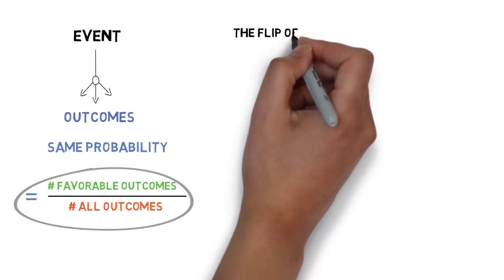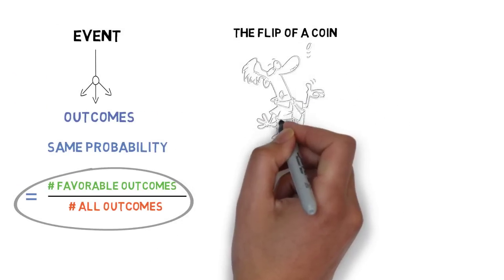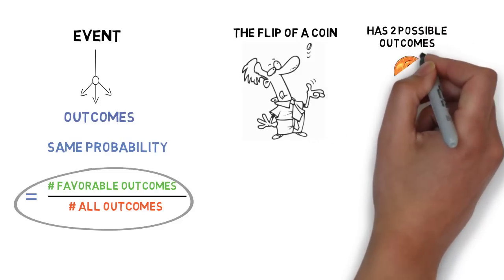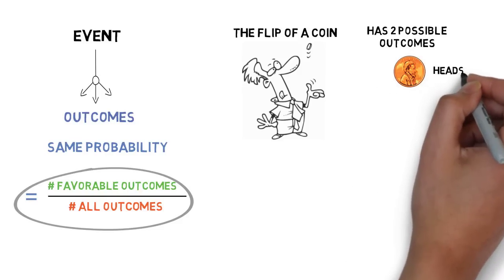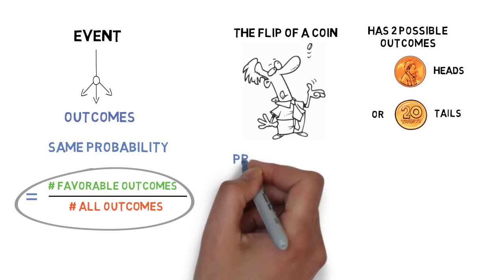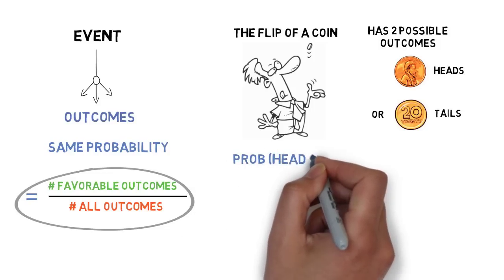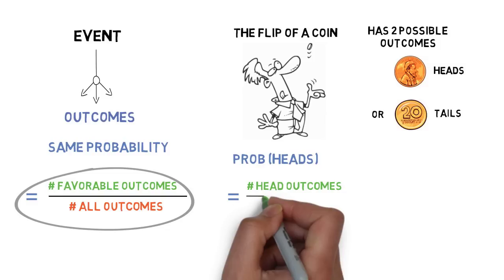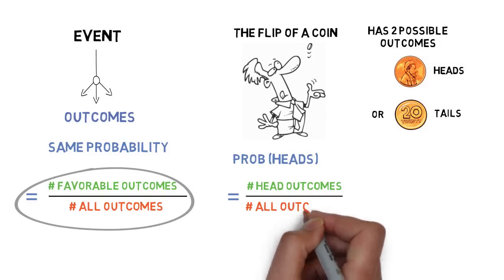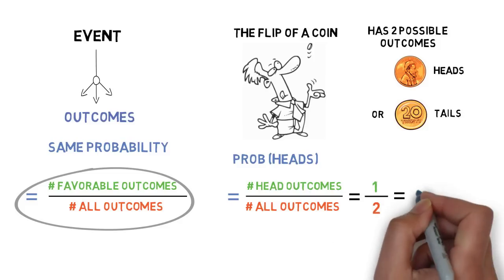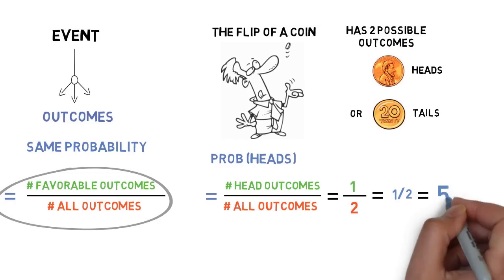The flip of a coin has two possible outcomes: heads or tails. Let's calculate the probability of heads. It is equal to the number of outcomes where heads can occur divided into the total number of outcomes, and we get 50%.